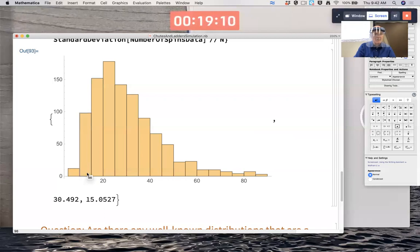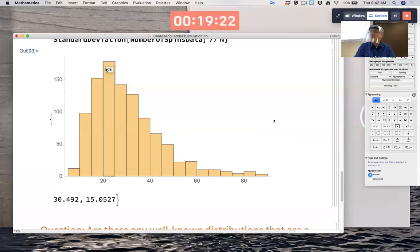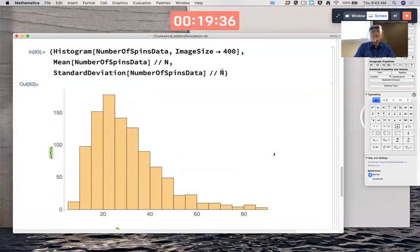The mode is somewhere between about 20 and 26 spins. But the mean is bigger. The mean's closer to, well, the mean for this simulation is 30.5. Because it's a long right tail. And I could do this over again.